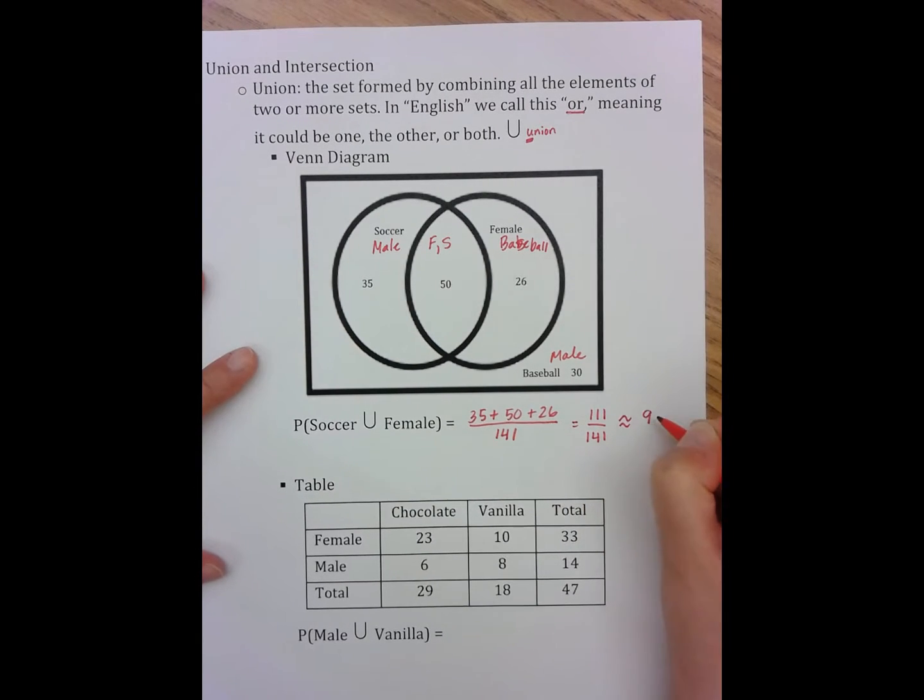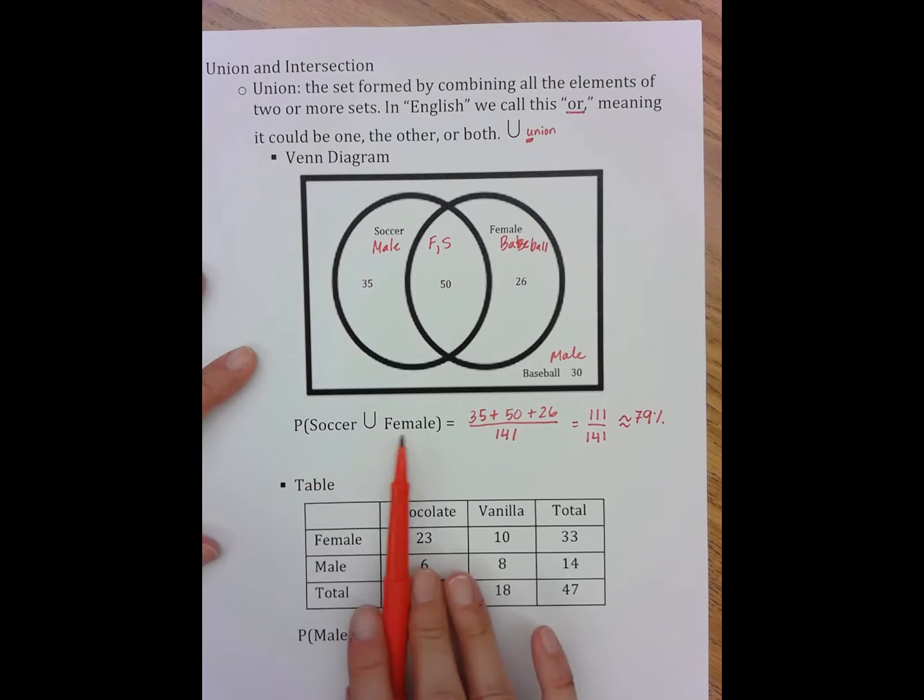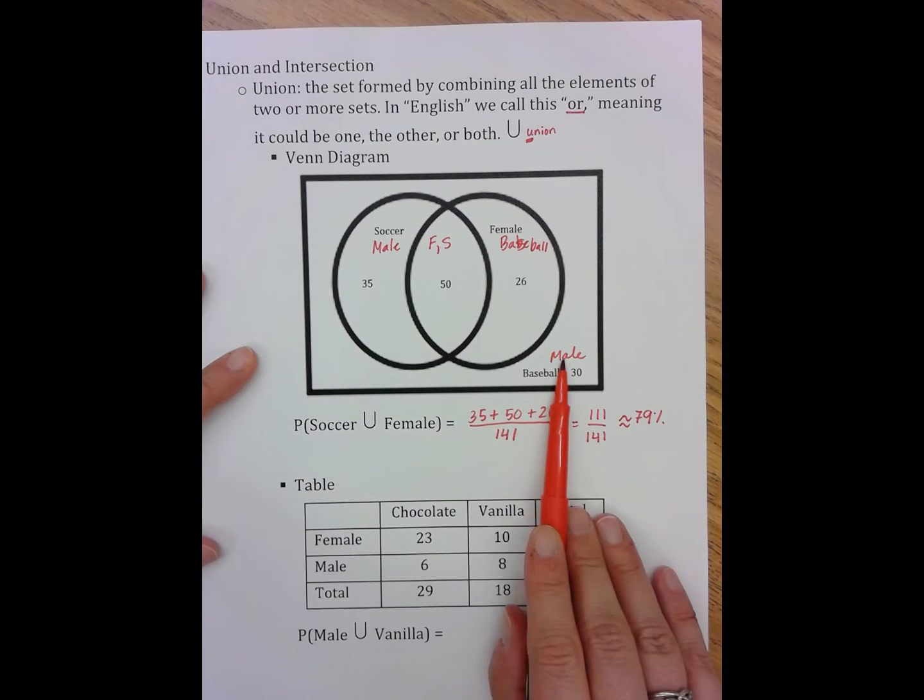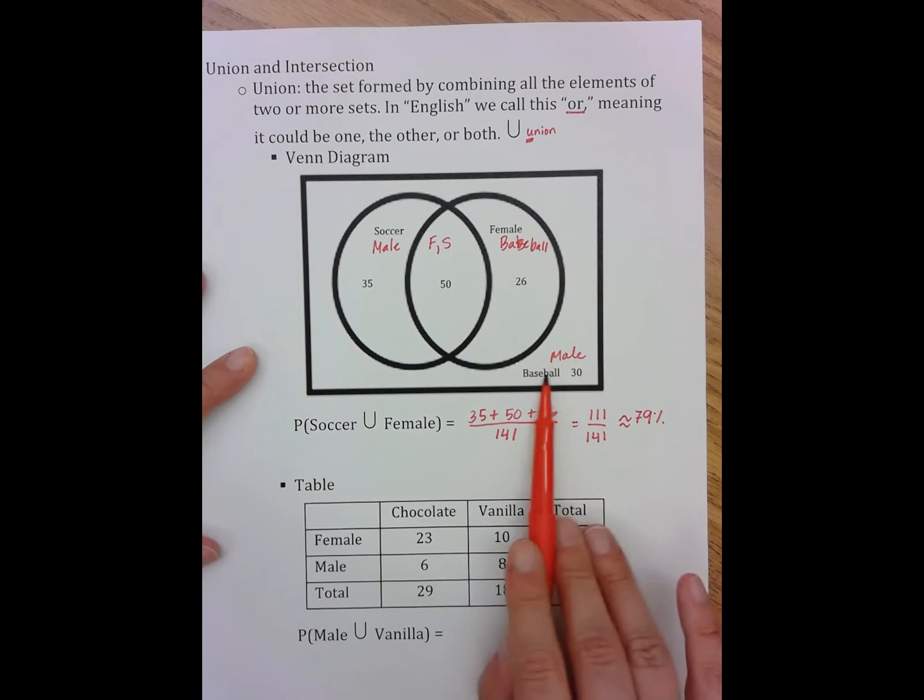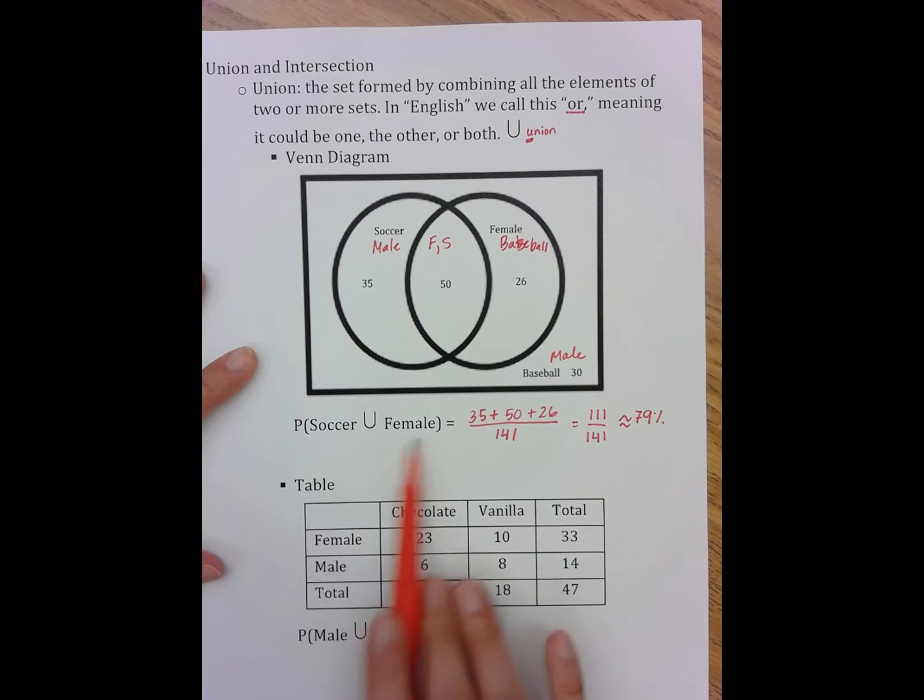which is a probability of about 79%. The only number in here that didn't fit the category of soccer or female was the one that had male and baseball. This is the category where it doesn't fit either of these qualifications.